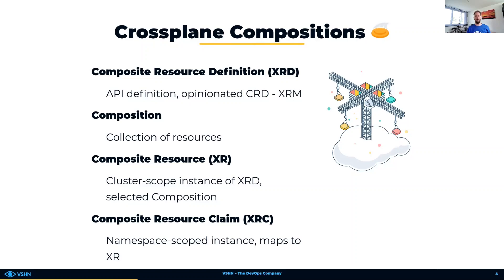The first one are composite resource definitions, also called XRD, which defines the custom API definitions. With them, the operator of the platform describes the opinionated services, which are then made available to the user. XRDs in the background generate Crossplane flavored Kubernetes custom resource definitions, which adhere to the Crossplane resource model.